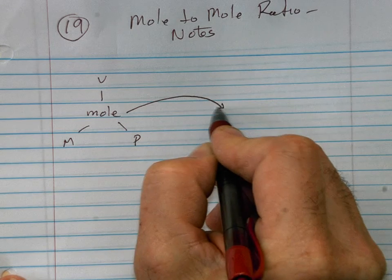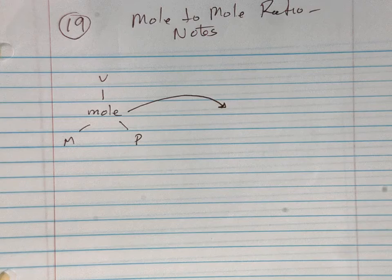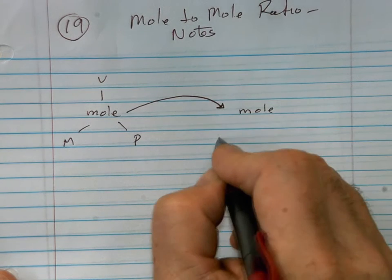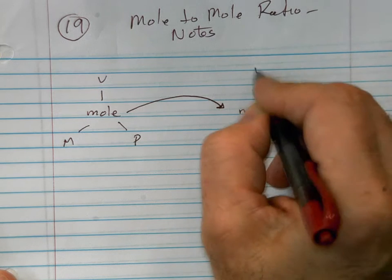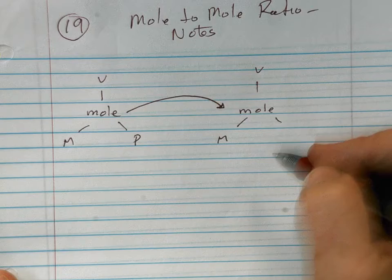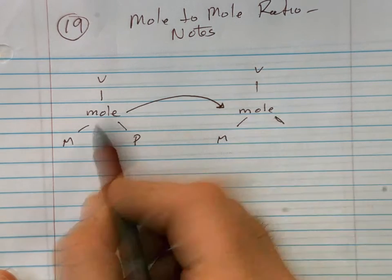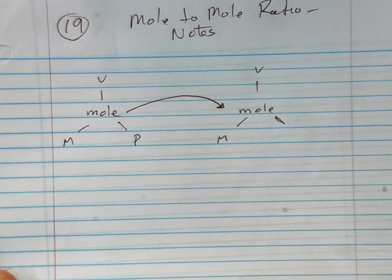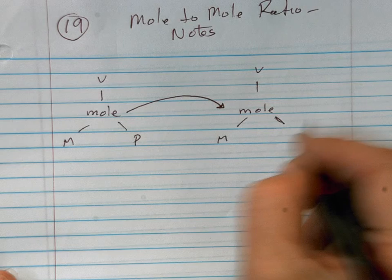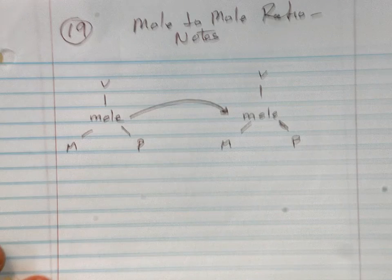Now we're going to draw an arrow coming over here and draw another MVP triangle. In the second part of the mole unit, we're going to be working inside of a balanced chemical equation to figure out stuff, and that's going to require us to jump between two compounds.